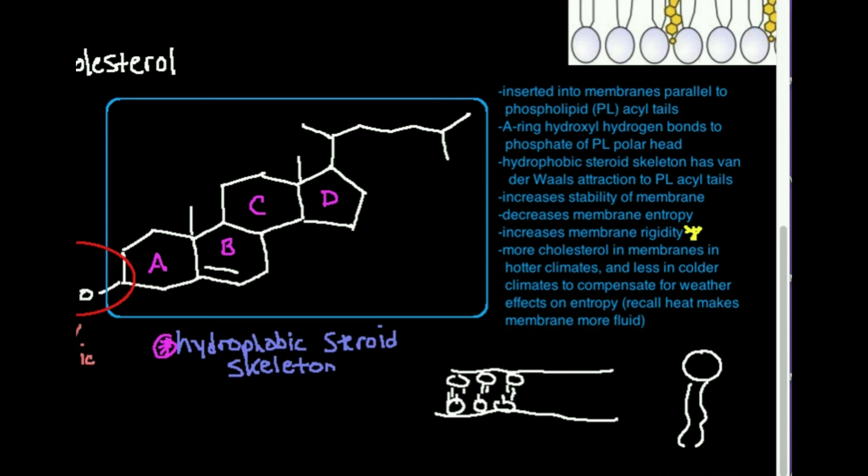The people who are from Canada, Alaska, that area, Siberia of Russia, they're going to have a lot less cholesterol in their membranes. And there are genetic differences, but on average, that is the case.